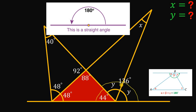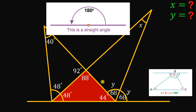Now, this 136 degrees is divided by the two equal angles, Y and Y. So let's divide 136 by 2. Therefore, the value of angle Y must be equal to 136 divided by 2, which is simply equal to 68 degrees. So we found the value of angle Y, which is 68 degrees.